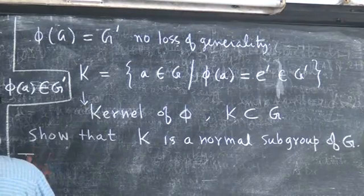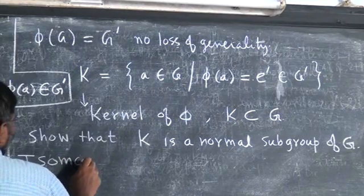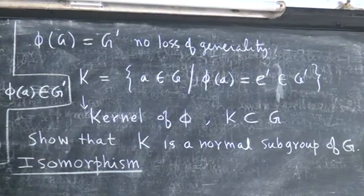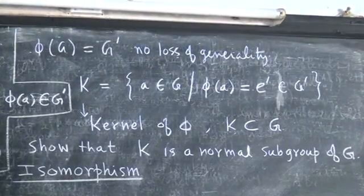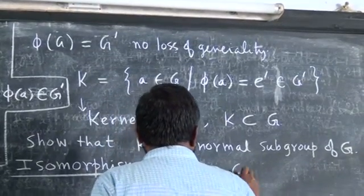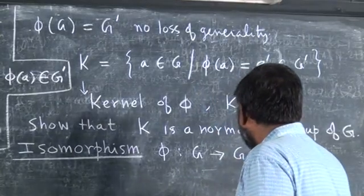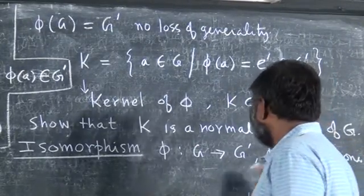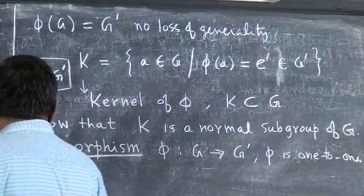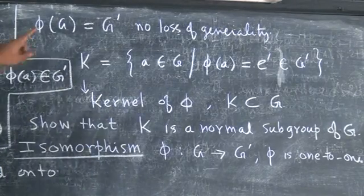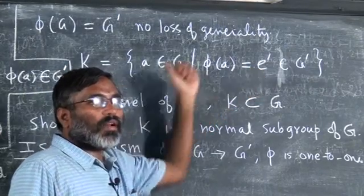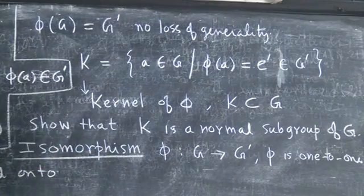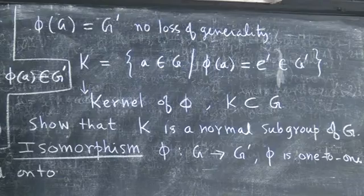We can define another mapping called an isomorphism. An isomorphism is a map φ from G to G-prime that is one-to-one and onto. In a homomorphism many elements can be mapped onto one element, but for an isomorphism one element is mapped onto only one element. So an isomorphism is a homomorphism with the additional requirement of a one-to-one correspondence between elements of G and G-prime.